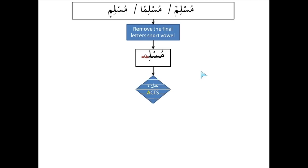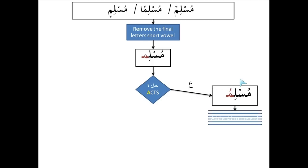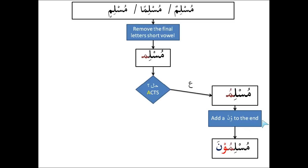The next step is we need to go back to the Acts Analysis — we need to find out what is the حال of the word we are dealing with. If it is مرفوع, then we put a ضمّة on the ميم, and then we add a واو with a سكون and a نون with a فتحة to the end, so we will get مسلمون.